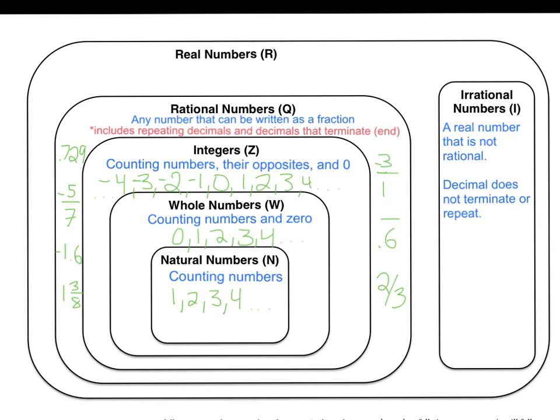This brings us to irrational numbers. Irrational numbers are real numbers that are not rational. In other words, they cannot be written as a fraction where the denominator is not zero, and in the decimal form, the decimal does not terminate or end, and it does not repeat.